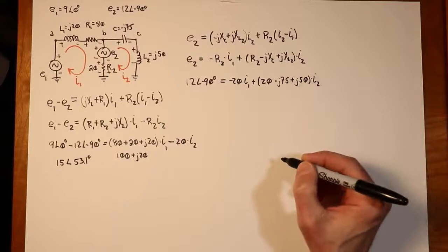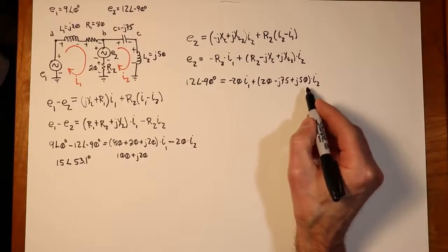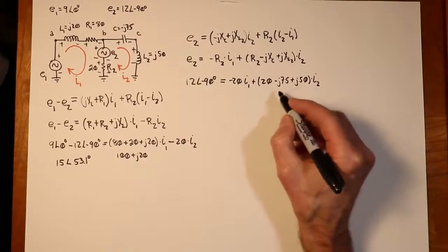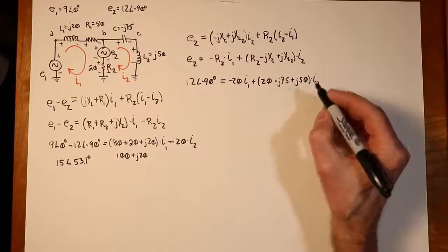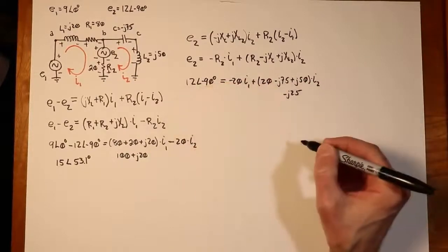And we can just combine up a few things. So, clearly over here we've got a J50 and a minus J75. So that's going to give us a minus J25 for this. And there's really nothing else to simplify. So we now have our two equations.